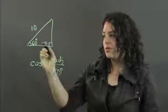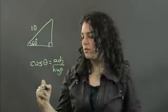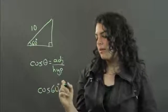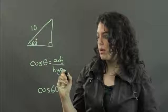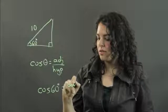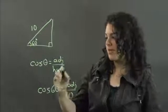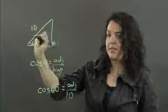Therefore, the cosine of this 60 degree angle, cosine of 60 degrees here, can be determined as the adjacent over 10. Because our hypotenuse in this case, which is the line opposite your right angle, is 10.